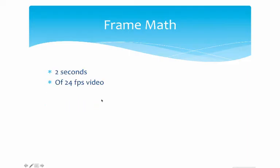What if you have two seconds of 24 frames per second video? Well, that's a straight-up multiplication. Two times 24. For every second, you've got 24 frames. Two seconds, so two times 24 frames, and that equals 48 frames.